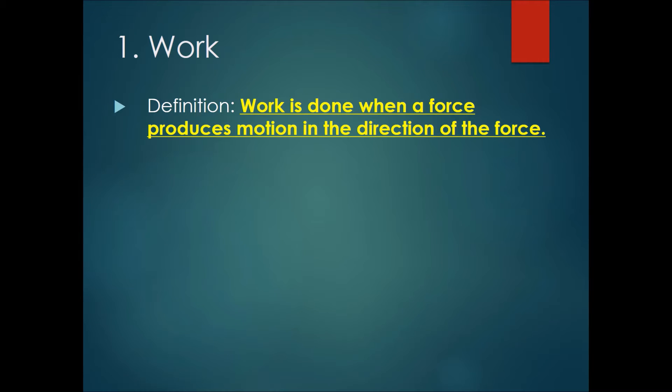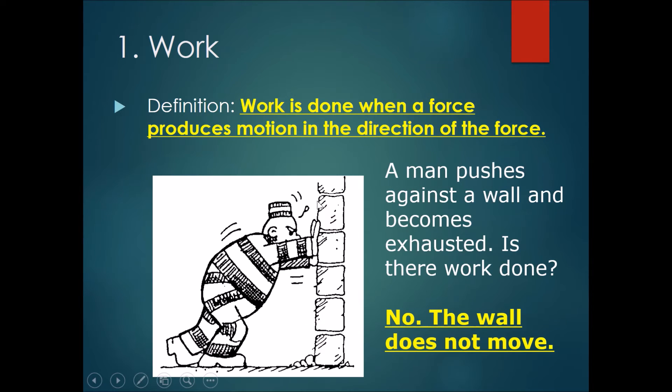Work is done when a force produces motion in the direction of the force. Let's look at this example of a prisoner pushing against a wall. He pushes against the wall and becomes exhausted, but the wall does not move. Is there work done? The answer would be no. The wall does not move, and therefore work is not done because it must produce motion in the direction of the force.